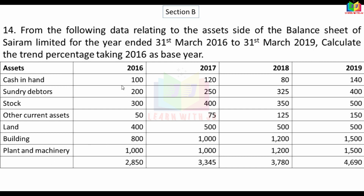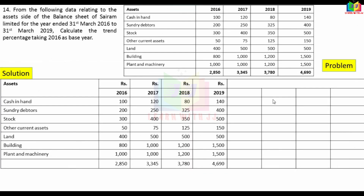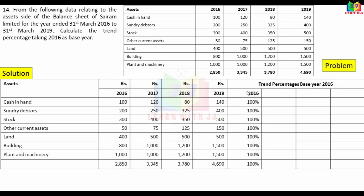We will receive the asset side and calculate Trend Percentage. 2016 is the Base Year. In the base year, the percentage of the asset will be 100. We will receive the Trend Percentage for each subsequent year.